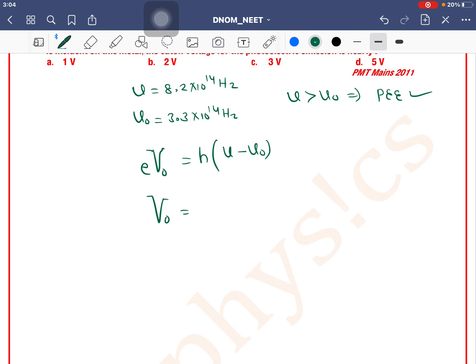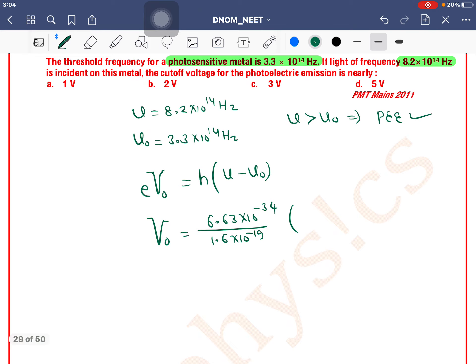So stopping potential V₀ equals h, where h is 6.63 × 10^-34 divided by 1.6 × 10^-19,